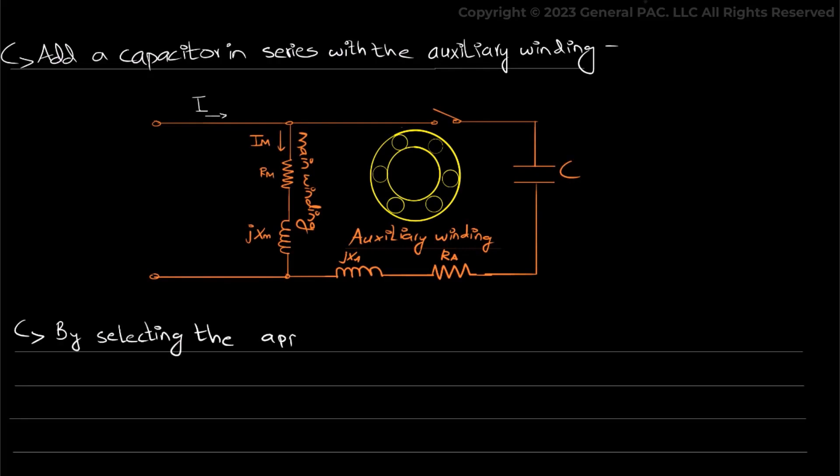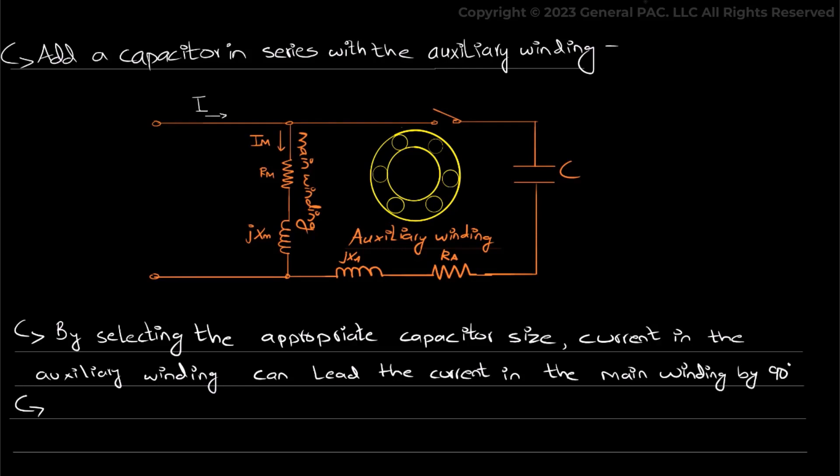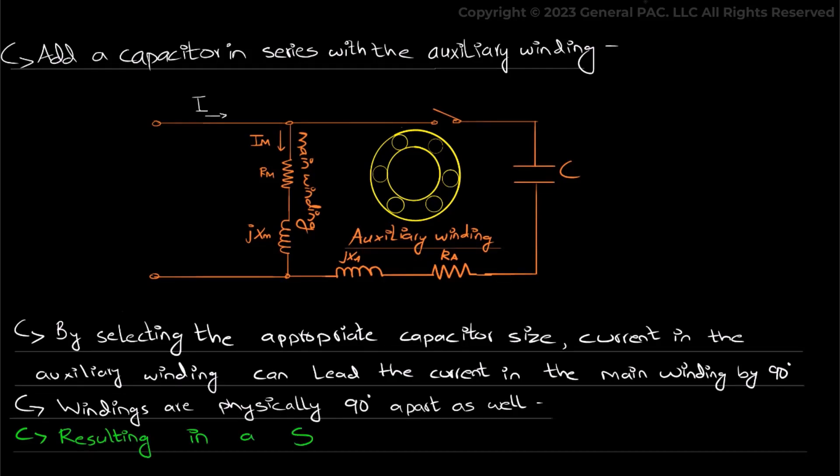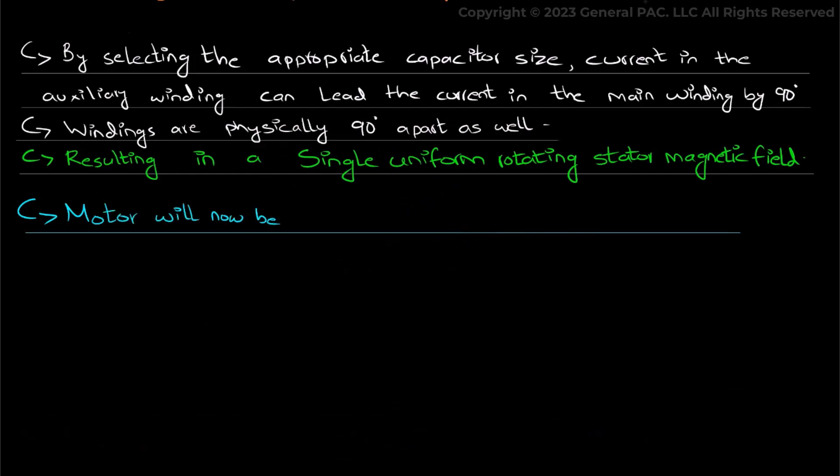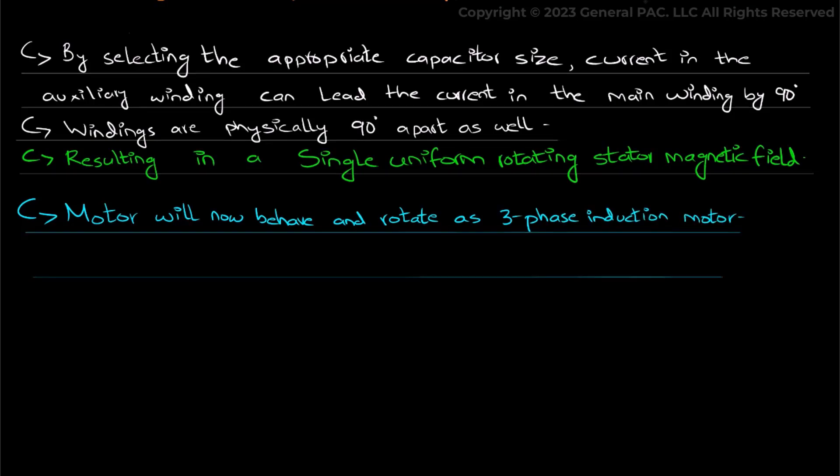Now consequently, by selecting the appropriate capacitor size, the current in the auxiliary winding can be made to perfectly lead the current in the main winding by 90 degrees. Now because the windings were physically 90 degrees apart as well, the result is a single uniform rotating magnetic field. The motor will now behave and rotate in the same way as a three phase induction motor.